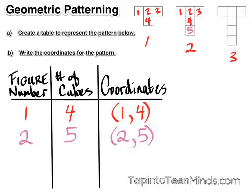And finally, for our third figure, the initial four cubes are given, the additional cube from figure two is given, and then finally, a sixth cube is added on for figure number three, and our coordinate would be three comma six.